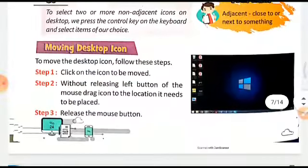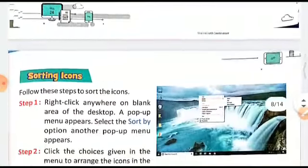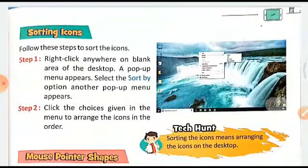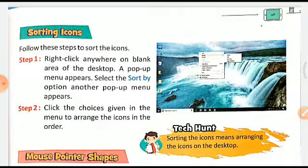We had seen the taskbar, task view, changing the position of the taskbar, selecting and unselecting an icon, and moving desktop icons. Now it's time to move ahead. Today the first thing we will see is how to sort an icon. Sorting of an icon refers to icons being arranged in a particular way — alphabetically A to Z, Z to A, or any other parameter.